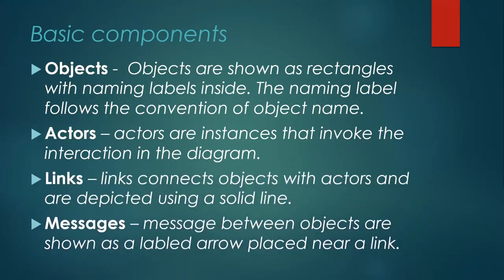The basic components of collaboration diagrams are objects, actors, links, and messages. Objects are shown as rectangles with naming labels inside — we give a name for each object following naming conventions. Actors are the persons or entities interacting with the application or system.